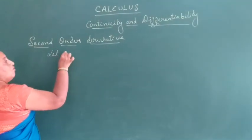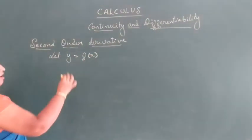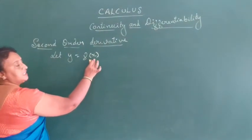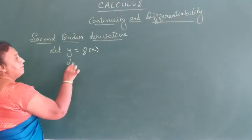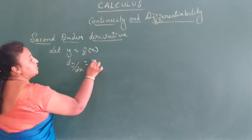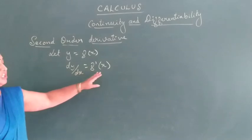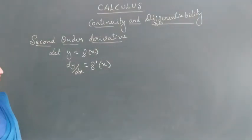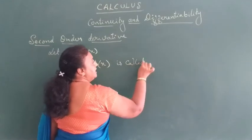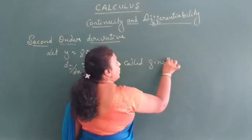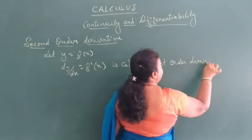Like y equals f(x): if y equals f(x) is a differentiable function, then the derivative dy/dx equals f′(x). This is called the first order derivative.